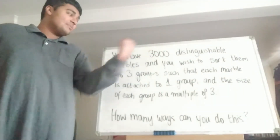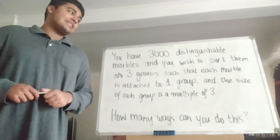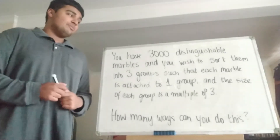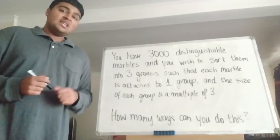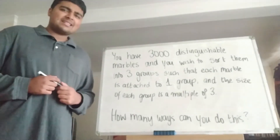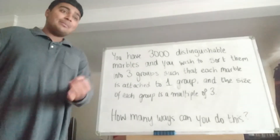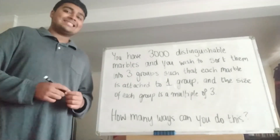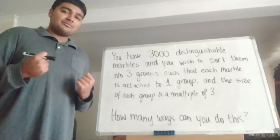We have 3,000 distinguishable marbles, and we wish to sort them into three groups such that each marble is attached to exactly one group, and the size of each group is a multiple of three. We want to know in how many ways we can do this. Another way of thinking about the setup is we have 3,000 distinguishable marbles and three hats, and we want to place the marbles into the hats such that the number of marbles in each hat is a multiple of three.